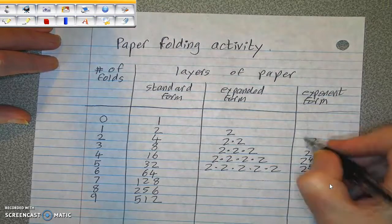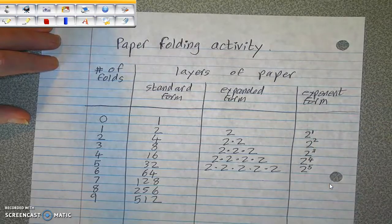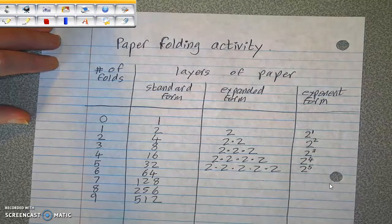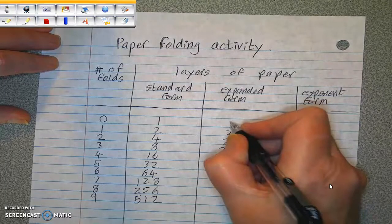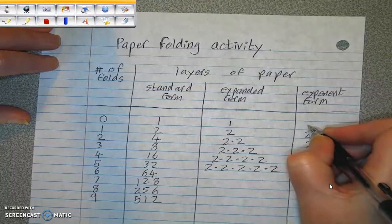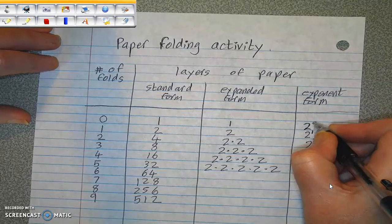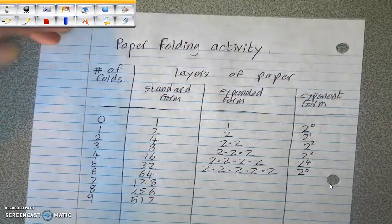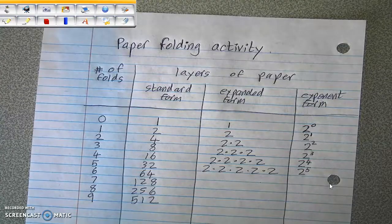If we work backwards, 2 to the power of 1 is 2. And 1, I know this is very, very strange. This is just like an extra little piece for your knowledge. It's not important in sixth grade to remember it. Number 1 is 2 to the power of 0.